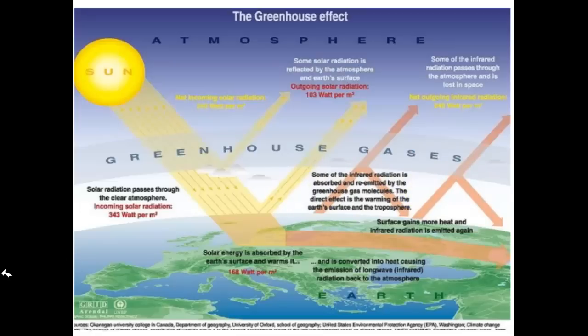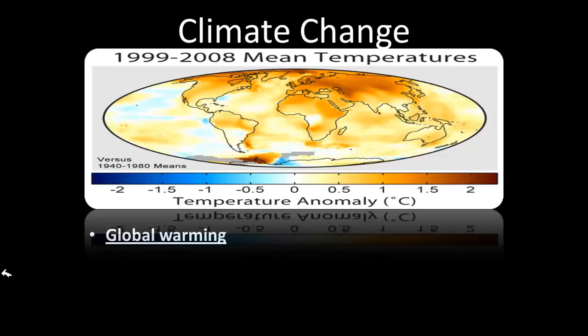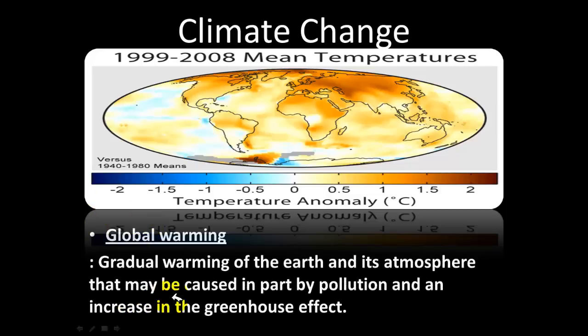When we hear about greenhouse gases, sometimes we think it's all bad — it's not. We need greenhouse gases. Now, this graphic shows the average climate change from 1940 to 1980 versus today, and it shows that temperatures on Earth overall have risen about one to two degrees, which doesn't sound like a lot, but it actually is. That brings us to global warming, which is the warming of the Earth's atmosphere, and it can be caused by pollution and an increase in the greenhouse effect.